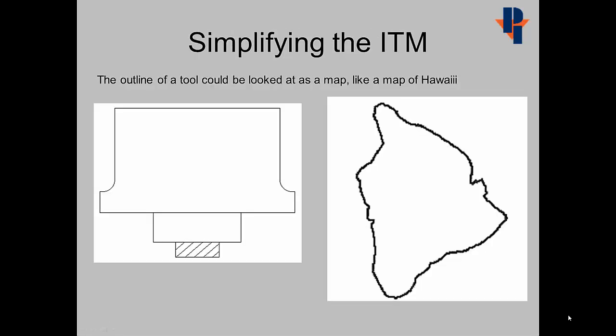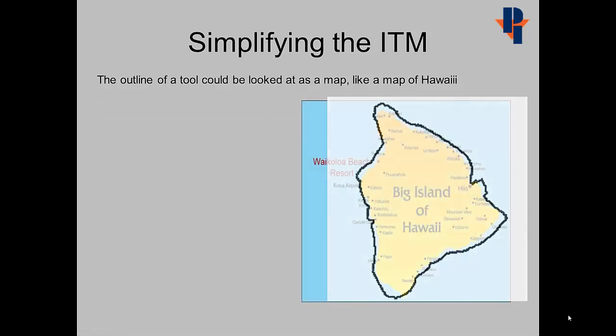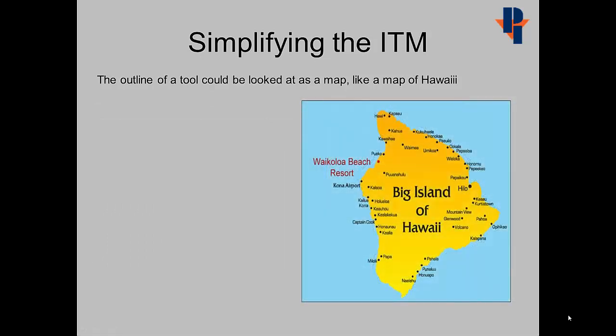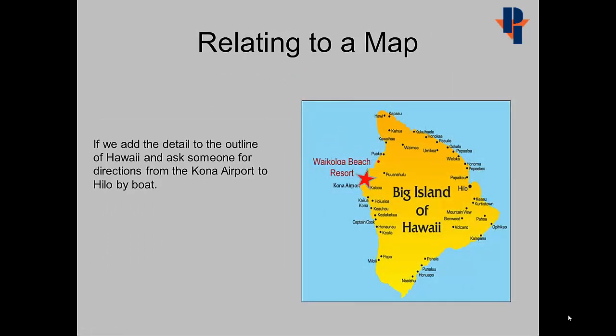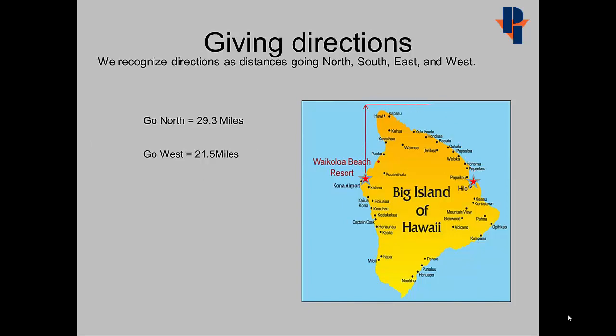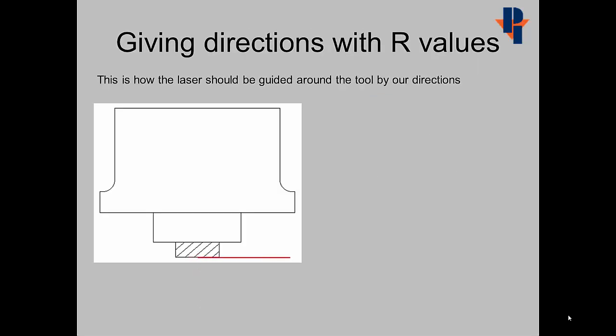The outline of a tool could be looked at as a map, like a map of Hawaii. If we add detail to the outline of Hawaii and ask someone for directions from the Kona Airport to Hilo by boat, we recognize the directions as distances going north, south, east, and west. This is how the laser should be guided around the tool by our directions. The directions we give are just measurements. Each R value specifies a distance.